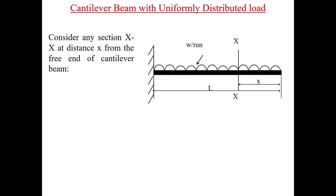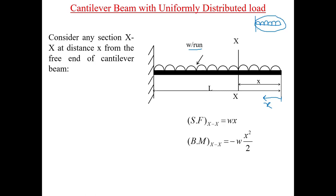Now let us take a cantilever beam of length L subjected to a uniformly distributed load (UDL) of intensity small w per unit length, instead of a point load. Again, we take the section X-X at a distance x from the free end. The total load to the right of the section is w times x, so the shear force at section X-X equals wx.